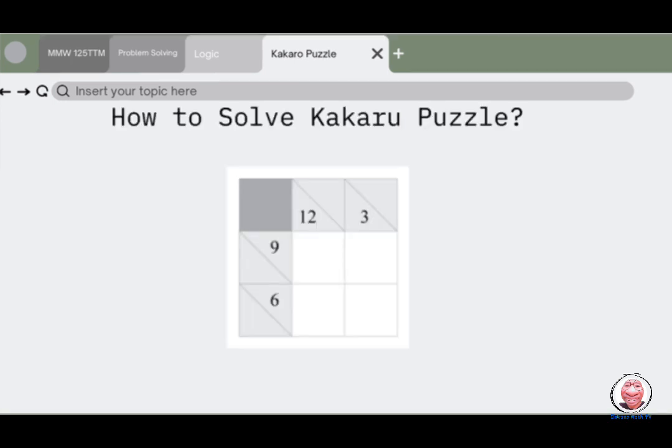Now we will proceed on how to solve a Kakuro puzzle. The task is to fill empty squares using numbers one to nine so the sum of each horizontal block equals the clue on its left and the sum of each vertical block equals the clue on its top. In addition, no number may be used in the same block more than once.